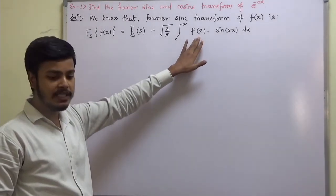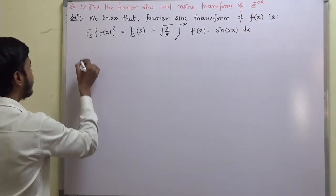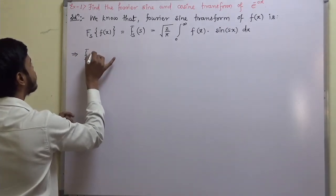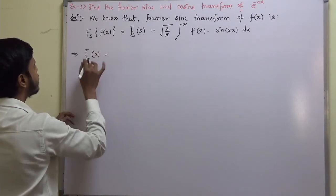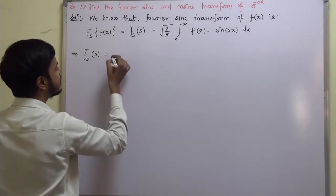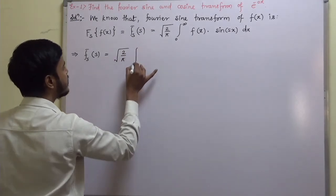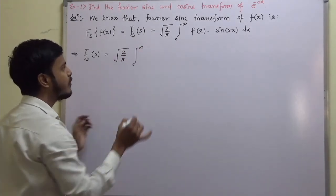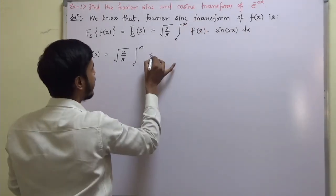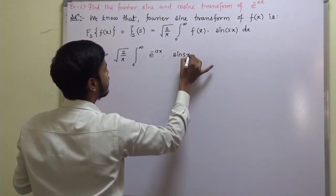Now we have f(x). What is f(x) here? Here, f(x) is equal to e to the power minus x. So the Fourier sine transform F_s(s) is equal to under root 2 by pi into integration 0 to infinity of e to the power minus x into sin(sx) dx.